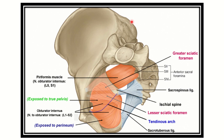First, let's look at the greater and lesser sciatic foramina. In this picture we can see the hip bone, the sacrum, and the greater sciatic foramen. The greater sciatic foramen is divided into two parts by the piriformis muscle. Below the piriformis is another area, which is the lesser sciatic foramen. We have to find the nerve which passes through both the greater sciatic and lesser sciatic foramina.